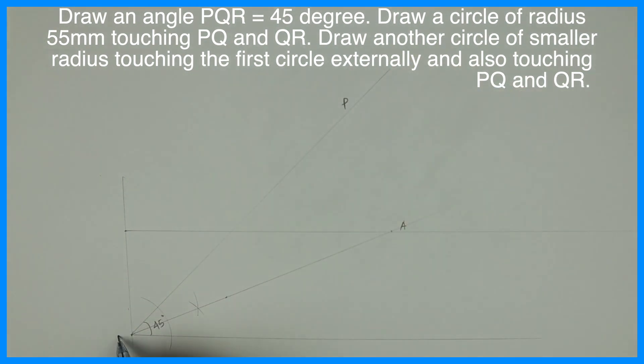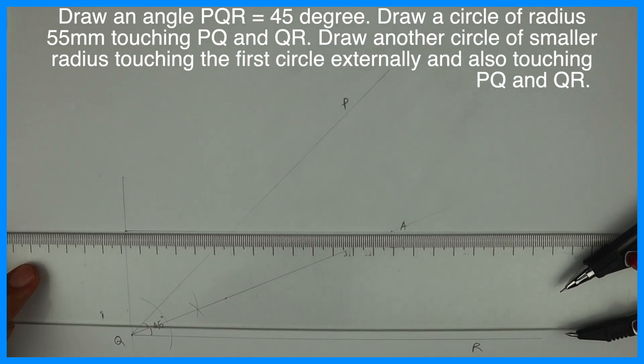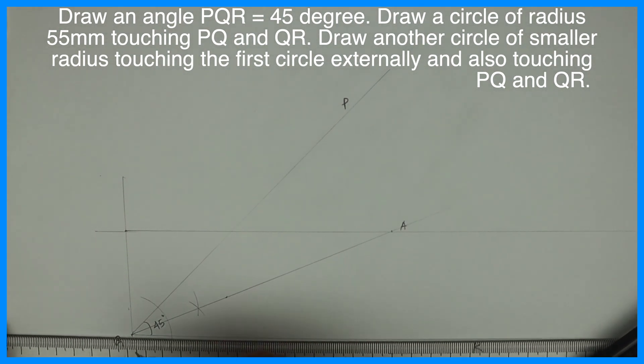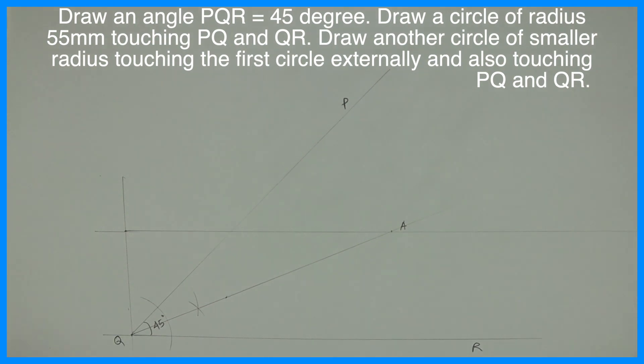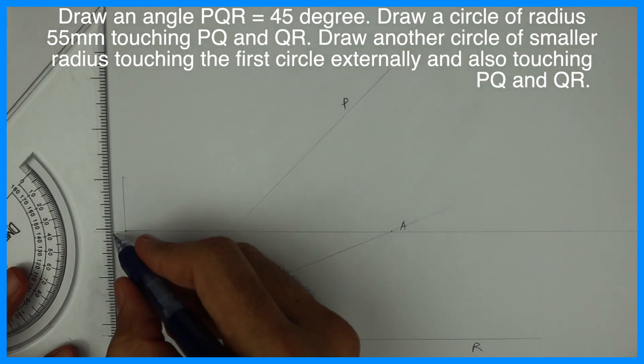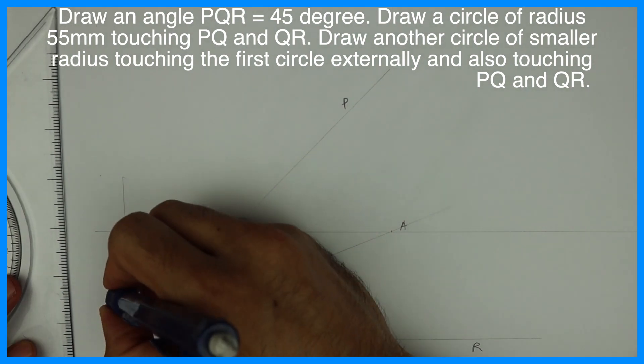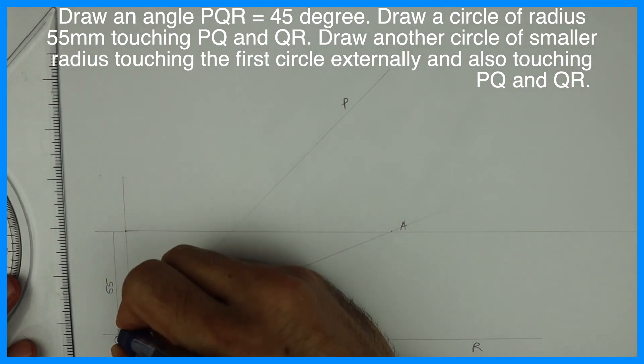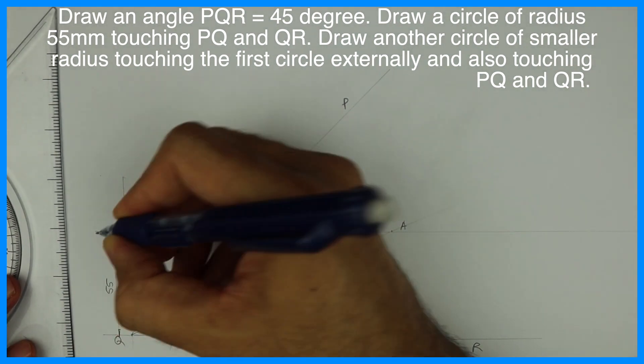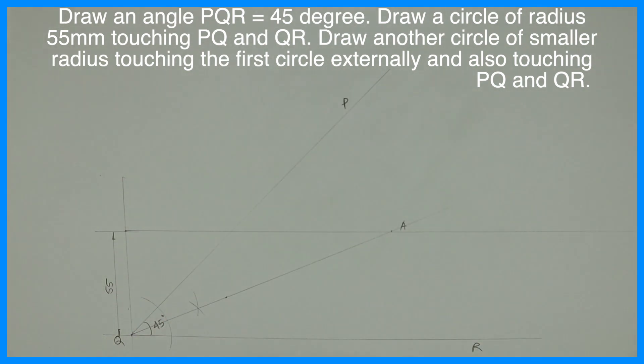We can write PQR. So we have angle PQR. We bisected angle PQR and we have taken height 55. See this, PQR and height 55. Wherever it will intersect, that is point A.